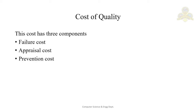Remember, in appraisal cost the cost for removing defects is not included — it is just checking whether the defect is present or not. The last component is prevention cost. As the name suggests, it is the cost for modifying the process to avoid defects in the software. For example, you may develop a prototype to reduce defects due to improper specification.